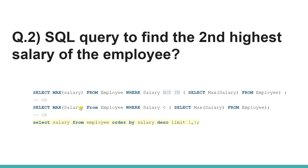If you want a specific query for this question, you can select the MAX salary that is NOT IN the overall MAX salary of the employee table. What we're doing is: the inner query selects the maximum salary, and the outer query skips that value, so we get the second highest salary as the result.